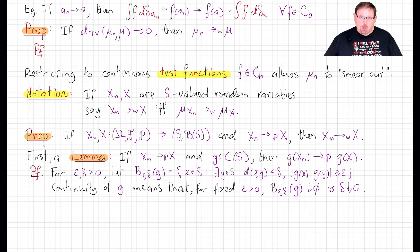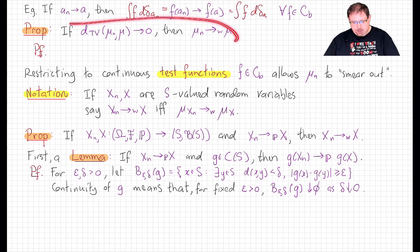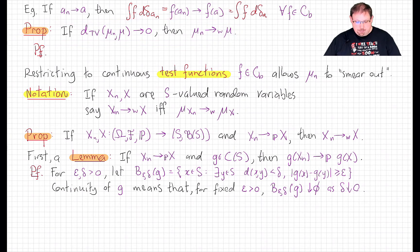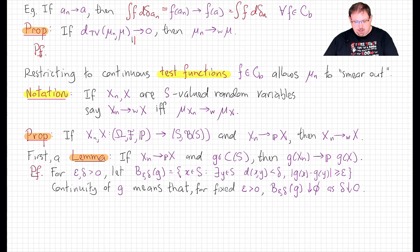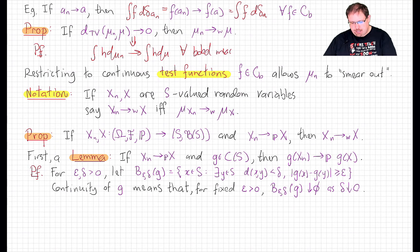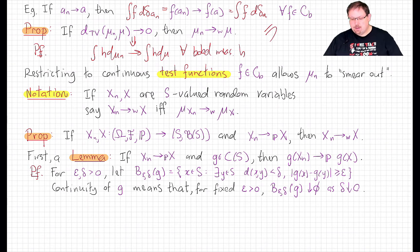We do always have weak convergence when we have total variation convergence. Weak convergence is strictly weaker than total variation convergence, simply because total variation distance going to zero implies that the integral of h dmu_n converges to the integral of h dmu for all bounded measurable functions h, and those include continuous bounded functions.